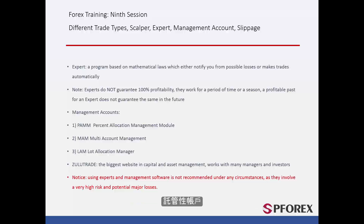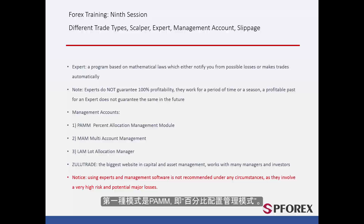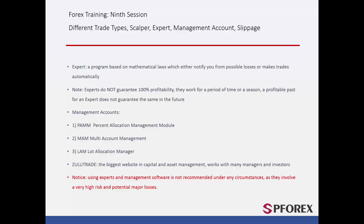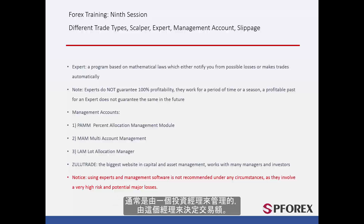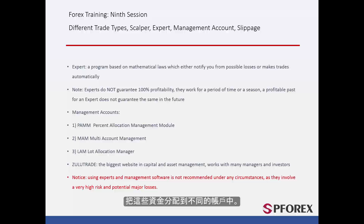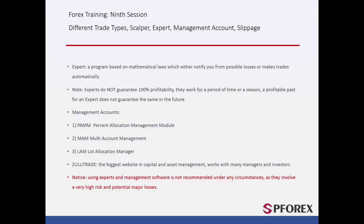Next, there are three management accounts. These are based on percentage. The first type is PAM, or Percentage Allocation Management Module. PAM accounts, which are more recognisable with brokers, are usually handled by one manager who will decide the trade amount. Based on the amount they trade and the capital flow trusted to them by their followers, capital will be divided into different accounts. A follower can choose to invest a portion of their account, say 10%, with one manager and another portion, say 20%, with another manager.